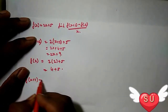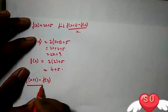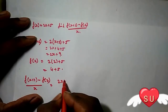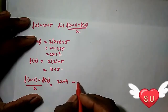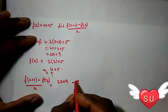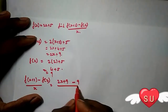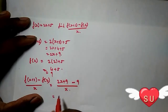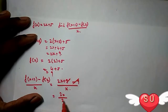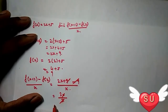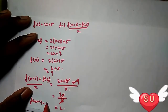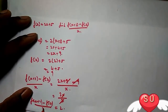Now substitute into the expression: [f(x+2) - f(2)] / x = (2x + 9 - 9) / x = 2x / x. The x cancels, giving the value 2.